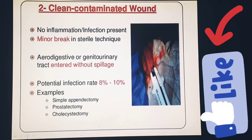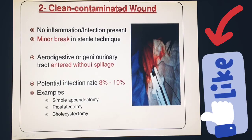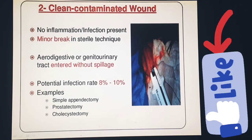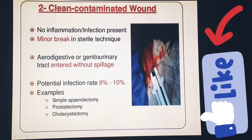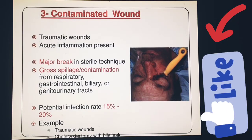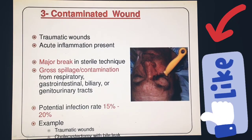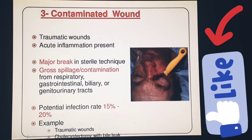In the clean contaminated wound, there is no inflammation but infection risk is present due to a minor break in sterile technique; the aerodigestive tract is also breached. In the contaminated wound, acute inflammation is present, there is a major break in sterile technique, and the aerodigestive tract is also breached. The potential infection rate is about 15 to 20 percent, with examples including traumatic bone injuries and cholecystectomy.